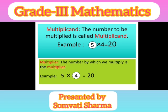Multiplier — the number by which we multiply is the multiplier. For example, 5 into 4 — here 4 is the multiplier.